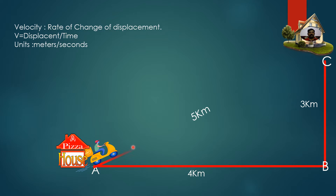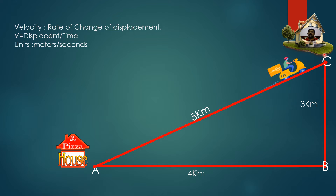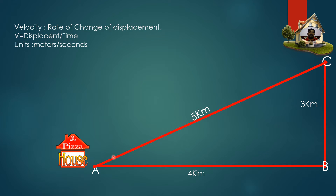Now observe this animation. The fidget boy started from the fidget house at point A and has to deliver his fidget at point C. He may go from A to B and then B to C, but in this animation he moves along a direct path and reaches point C. The shortest distance - from the initial to the final position - is 5 kilometers. The rate of change of displacement is defined as velocity.